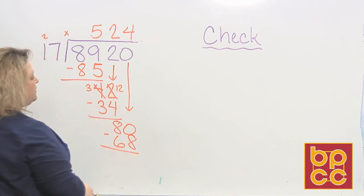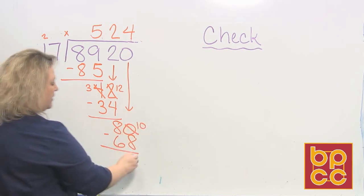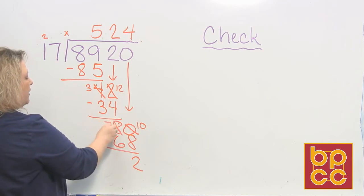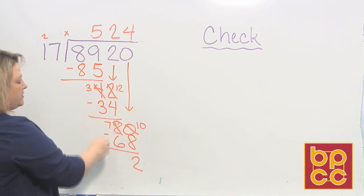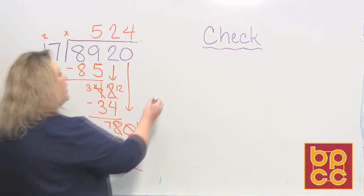And when I do this subtraction, I borrow again, and that makes that 10, which when I subtract, I get 2. And when I borrowed, I change that 8 to a 7, so 7 minus 6 is 1. And then that leaves me a remainder of 12.